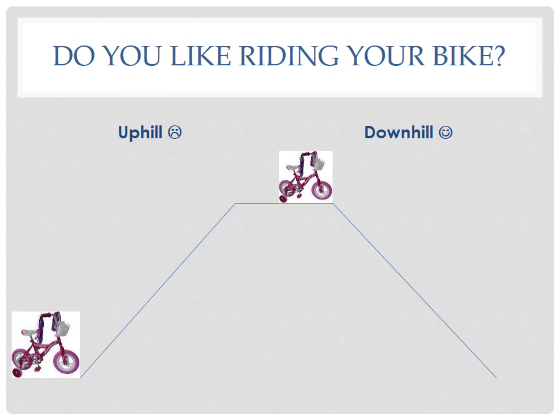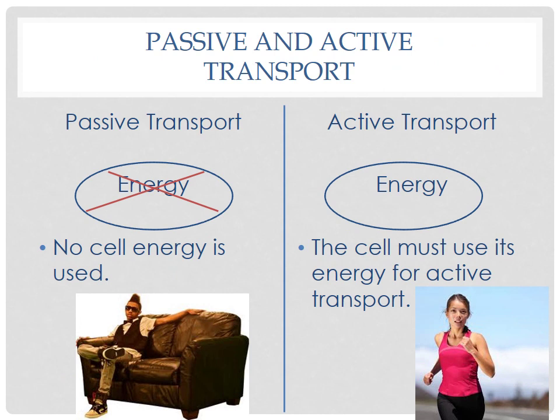This represents passive and active transport — the two types of material movement we're covering. The first is passive transport, which requires no energy from the cell. Just like a guy sitting on the couch, passive transport takes no energy — like riding your bike downhill. The second type is active transport, which uses energy — like riding your bike uphill. The cell must use its energy to move materials.